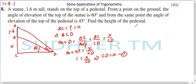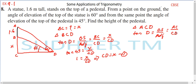Now let us consider the bigger triangle ACD. The angle at D is 60 degrees, the opposite side is AC, and the adjacent side is CD. So tan D equals opposite over adjacent, which is AC over CD. Now AC equals AB plus BC, where BC is x and AB is 1.6.